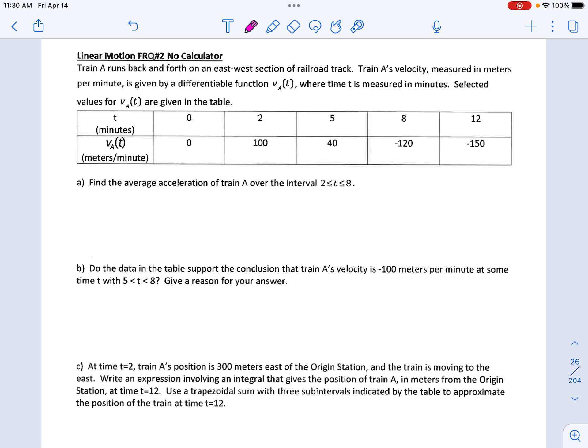This one, notice, is a table problem, but it is also a motion problem, because we're talking about the velocity of a train. So it says train A runs back and forth, only going east-west. Train A's velocity is measured in meters per second, and they give us a couple different times. Selected values for the velocity of train A are given.